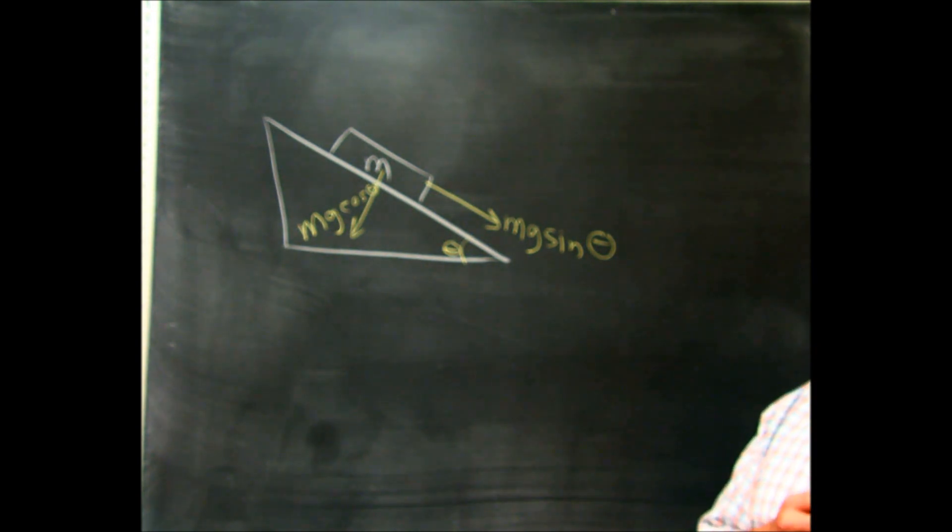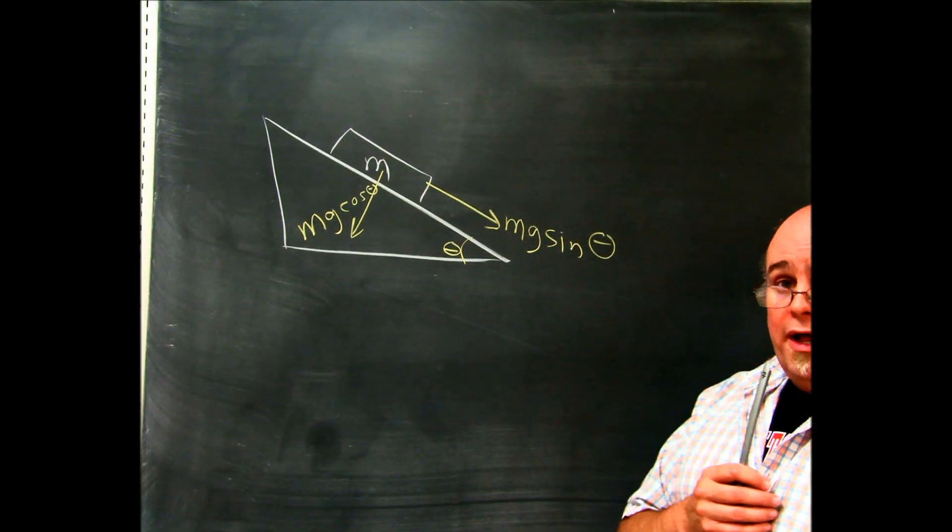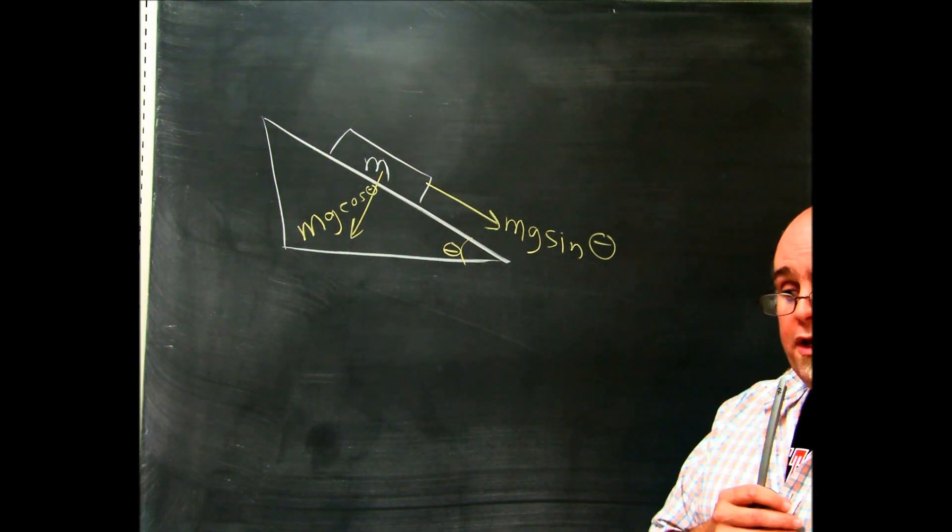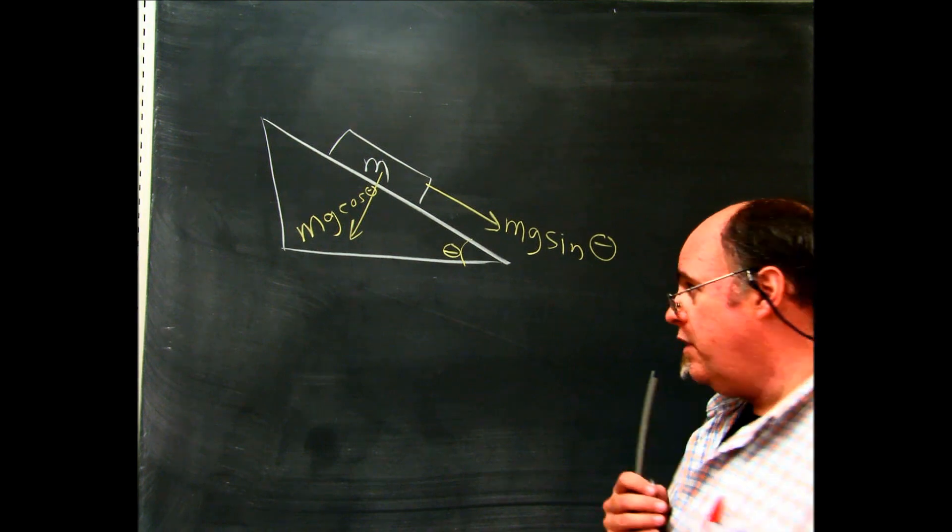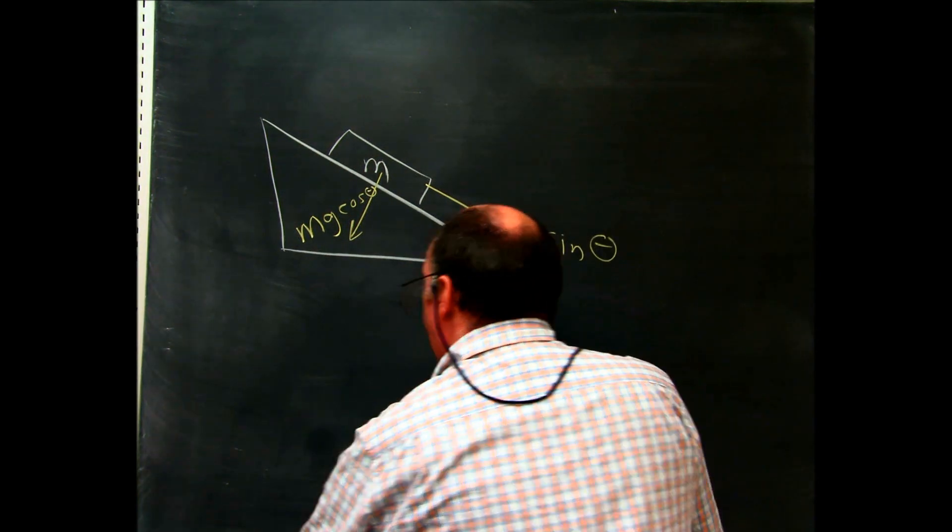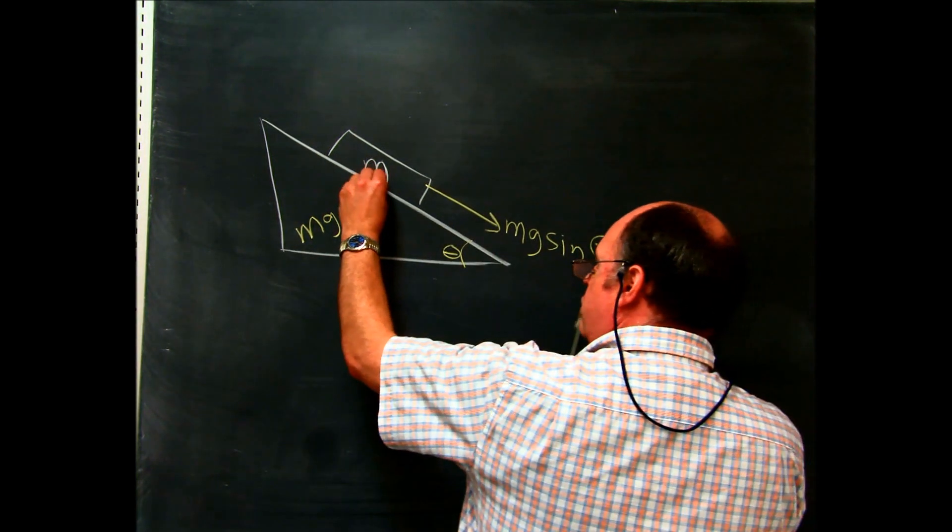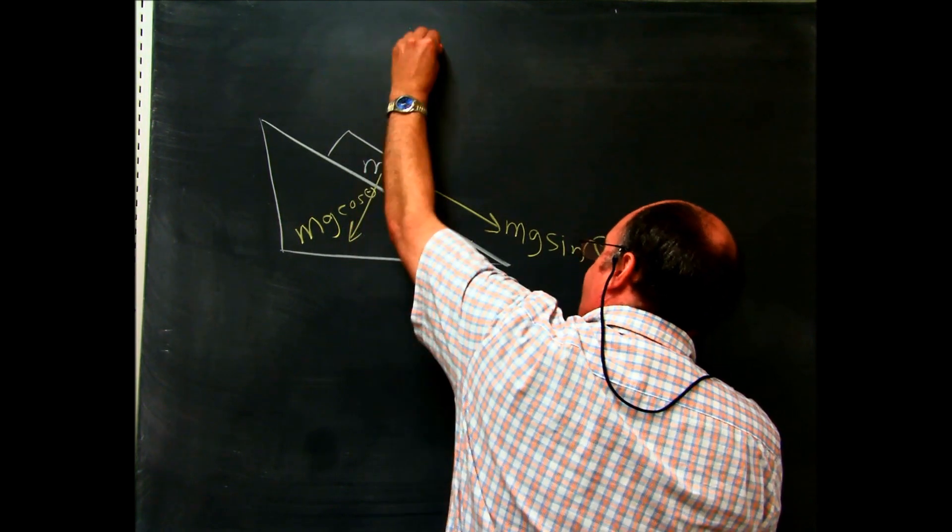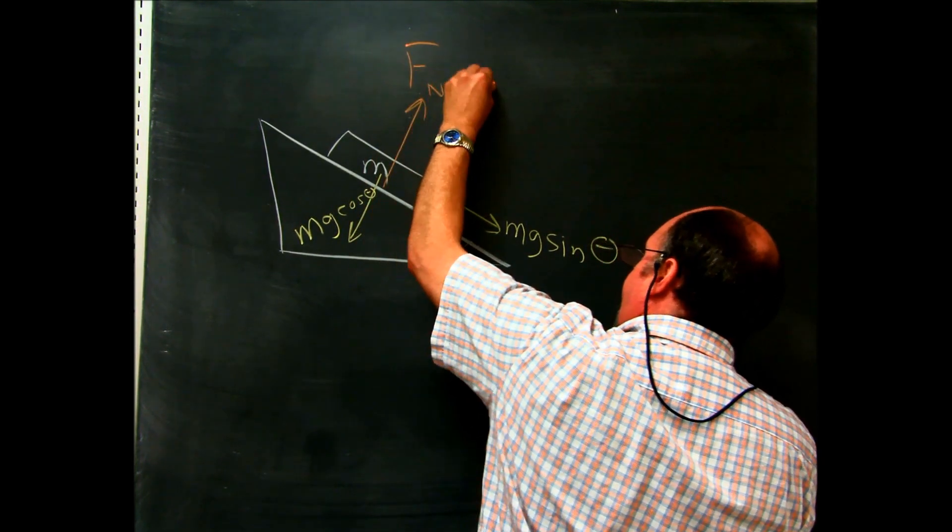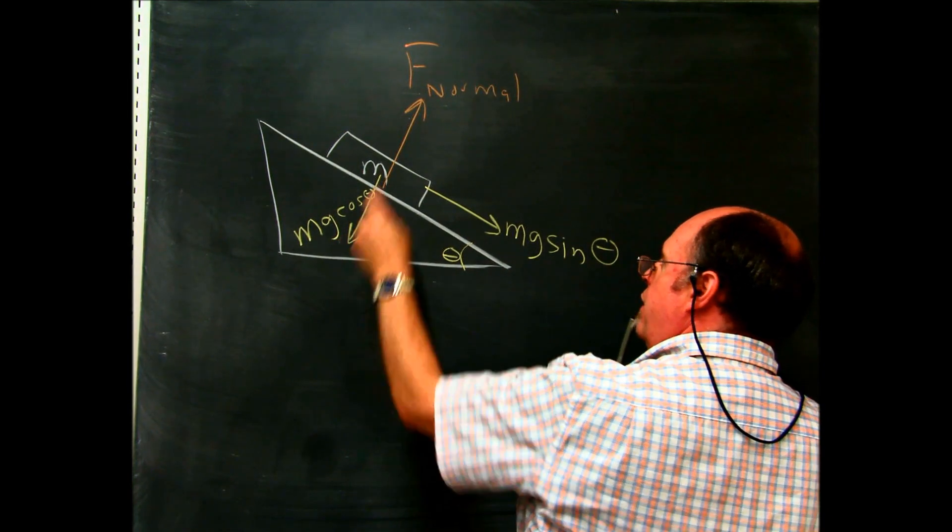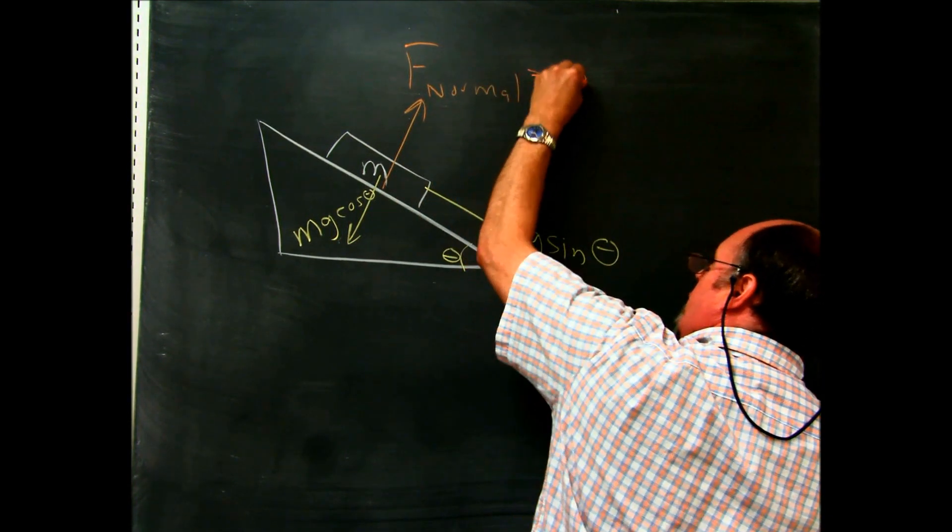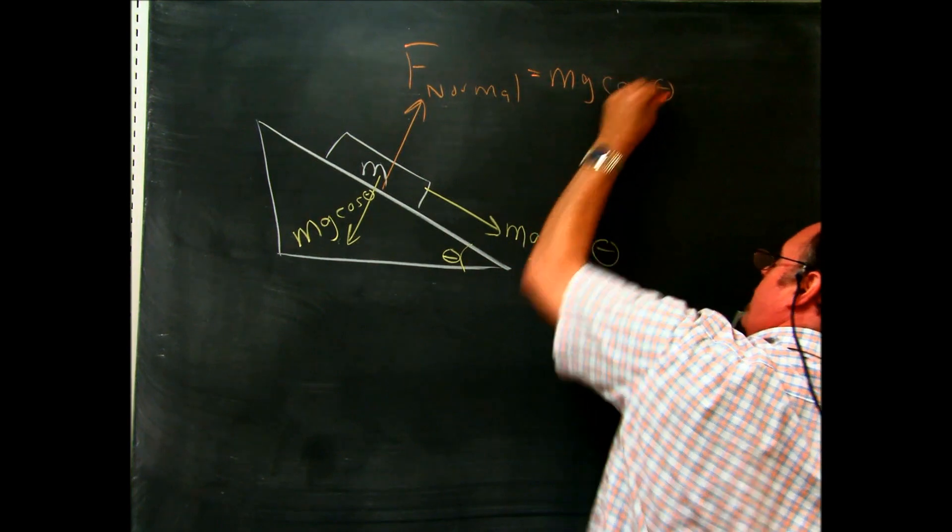So that was done in class and we were studying that. So there are other forces, so we've talked about in chapter four, we should always show the free body diagram, meaning show every force that's acting on this object. Well, what's another force acting on the object? The normal force. So the normal force would be going this way, and the normal force would be equal and opposite to this thing right here. And this would be mg cosine of the angle.